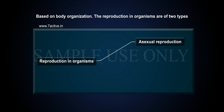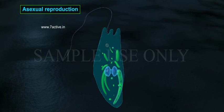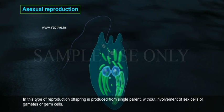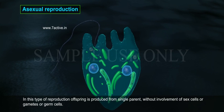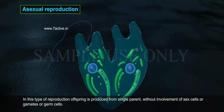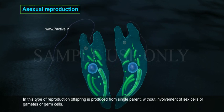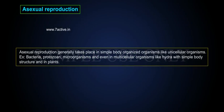Asexual Reproduction and Sexual Reproduction. In asexual reproduction, offspring is produced from a single parent without involvement of sex cells, gametes, or germ cells. Asexual reproduction generally takes place in simple body organized organisms like unicellular organisms.